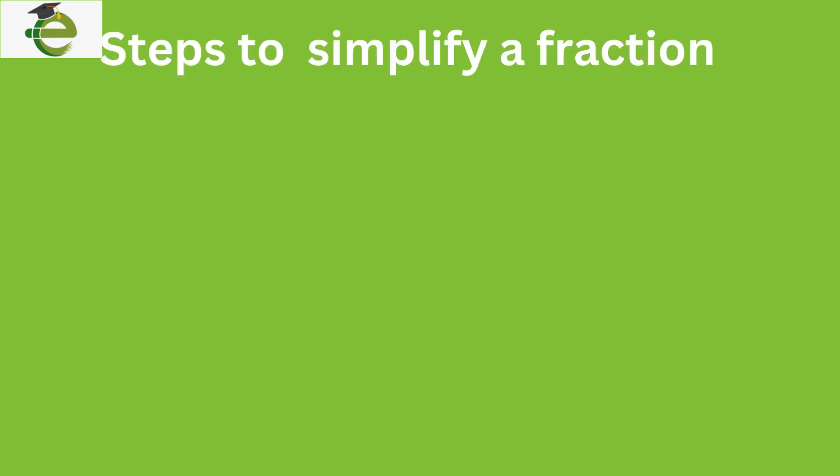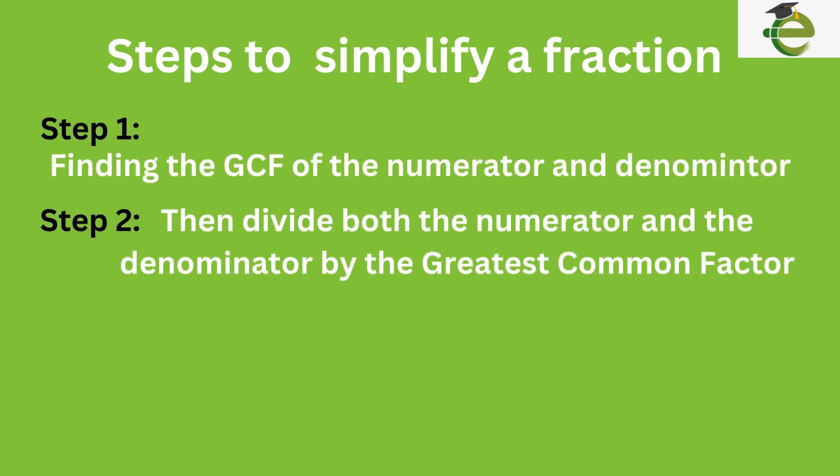To simplify a fraction, follow these steps. First, identify the greatest common factor of the numerator and the denominator. Then, divide both the numerator and the denominator by the greatest common factor.